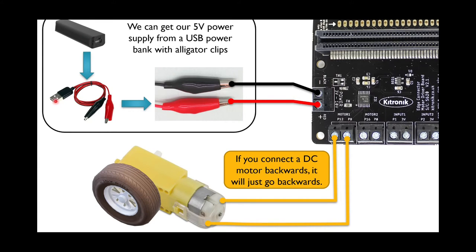We'll use a USB to alligator clips. The black alligator clip will go to ground, the negative terminal here. The red alligator clip will go to positive, and we'll have our motor plugged into motor 1 here.